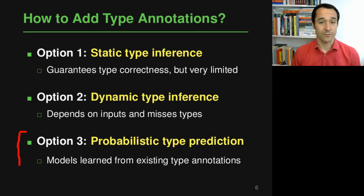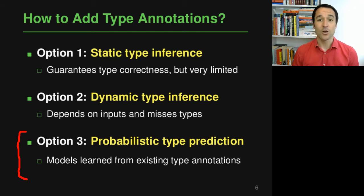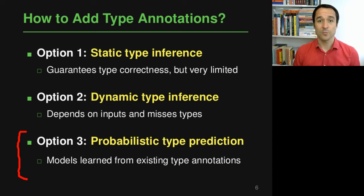Option three — which is the focus of what we're talking about here — is to have some kind of probabilistic type prediction, for example based on a neural network that learns from existing type annotations to add the missing ones. We will look at how to use a hierarchical neural network for this purpose.